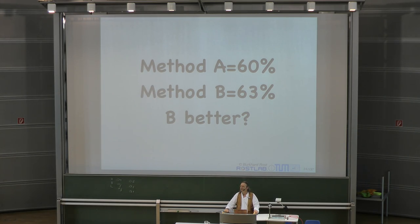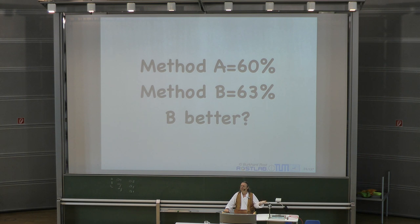Q3 is a three-state accuracy that measures what fraction of residues is correctly predicted in either of those three states. The answer for method A is 60% and the answer for method B is 63%.